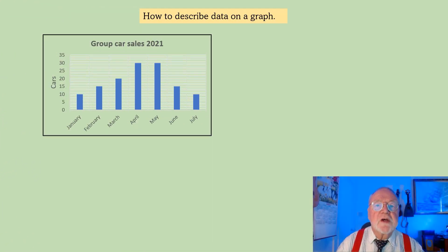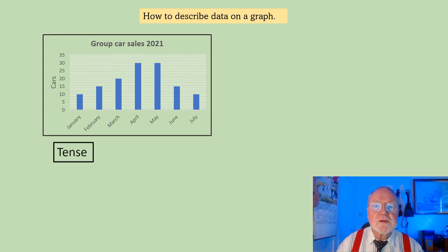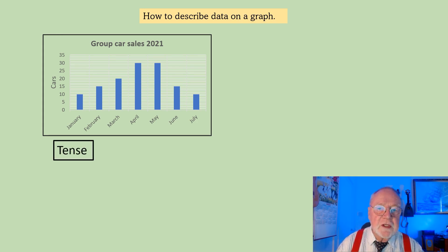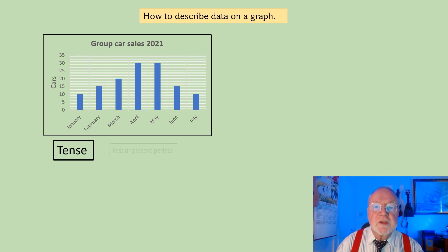Here's a bar graph showing group car sales for 2021. What should we look at first? You have to consider the tense you're going to use. Mostly data is history — it comes from the past. You can have a chart looking into the future of course, but mostly we look backwards. We've already got the data, so we would use a simple past tense.